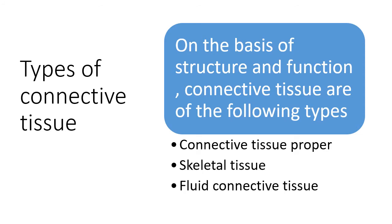Moving on to the next tissue — connective tissue. Connective tissues are specialized for connecting various tissues and organs together. They are found in different structures of our body like bone and blood. The cells of connective tissue contain a large amount of intercellular space or matrix. Unlike epithelial tissue, connective tissues have large intercellular spaces filled with matrix or ground substance. On the basis of structure and function, connective tissues are of three types: connective tissue proper, skeletal tissue, and fluid connective tissue.